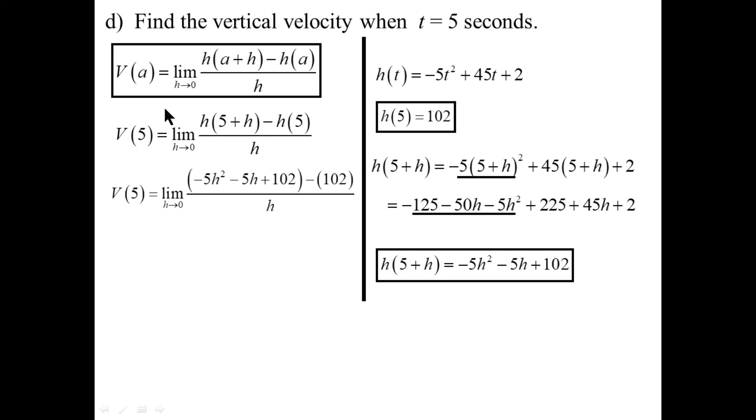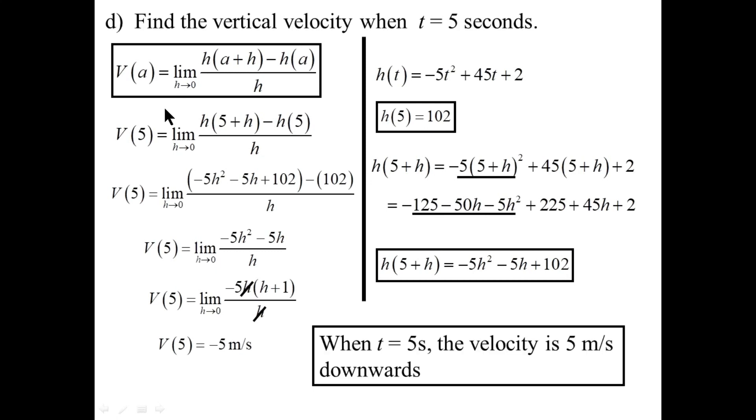Because we figured out h of 5 and h of 5 plus h. Plugging them both in. And the math is really quite simple. Collect like terms. Factor out h. Cancel where appropriate. And now, it's time to take the limit. So plug in 0 for h. And we have v of 5 as negative 5 meters per second. At that instant in time, the velocity is 5 meters per second downwards. So it had already reached its vertex and was on the way down. The word downwards here is this negative sign here.